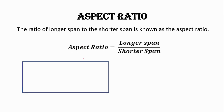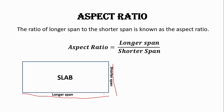For example, consider a slab where the longer span is four meters and the shorter span is two meters. The aspect ratio will be longer span over shorter span, which gives a ratio of two.